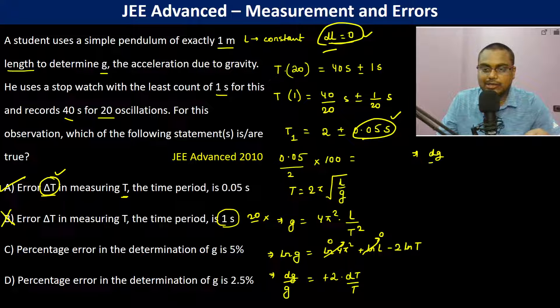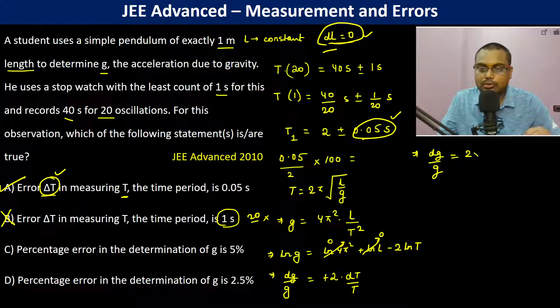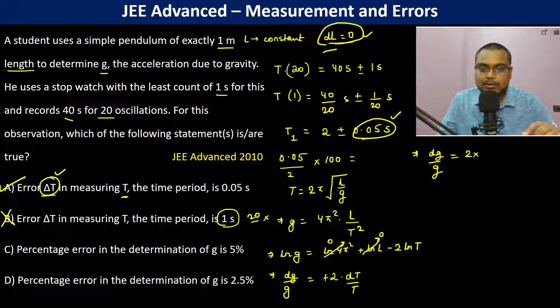δg/g, we are now calculating in percentage, is 2 into δT/T. What is δT? It is 0.05 divided by T, that is 2, into 100 percentage.